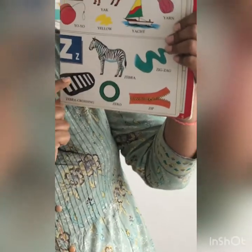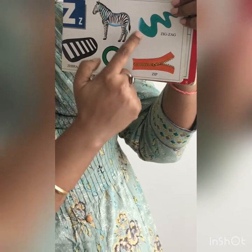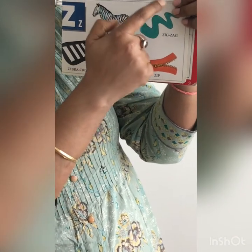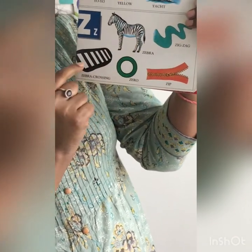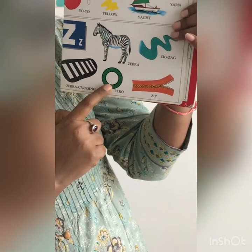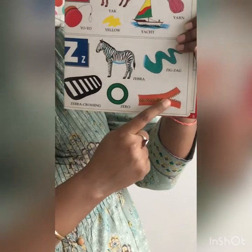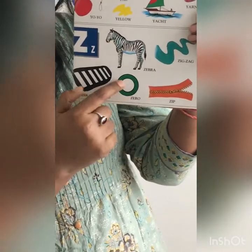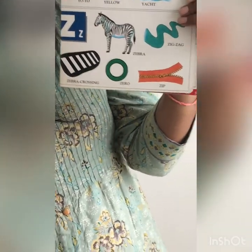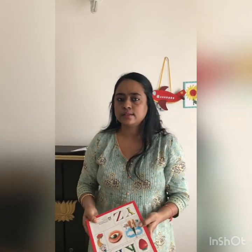Now here we have some letter Z words to revise: Z for zebra, Z for zigzag, Z for zebra crossing, Z for zero, Z for zip. Is there any other word that starts with letter Z? What about zoo!